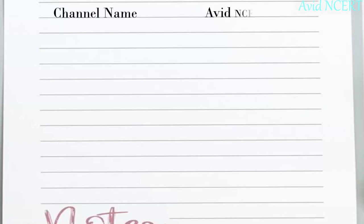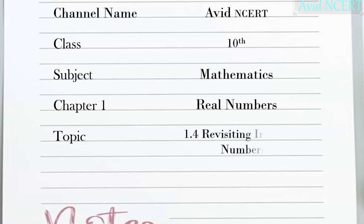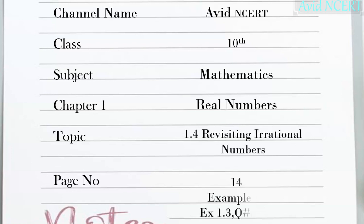Hello viewers, welcome to my channel. This is Geeta. This session is for Class 10 Mathematics, Chapter 1 Real Numbers. The topic we are discussing is 1.4 Revisiting Irrational Numbers.